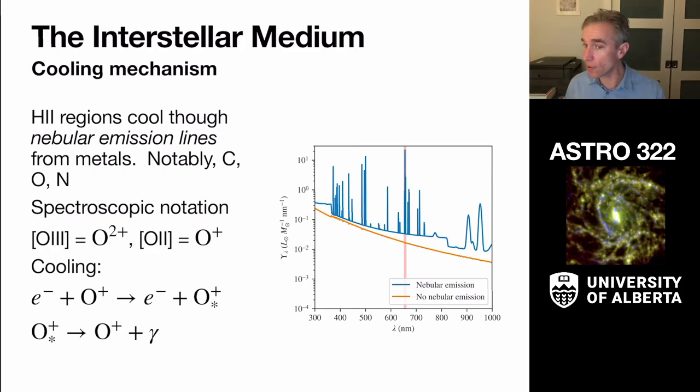And the general process for cooling is that an electron is running around in the plasma and it hits one of these atoms. It doesn't recombine, but it undergoes a collision where it excites an internal degree of freedom,